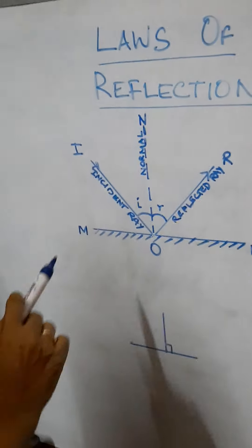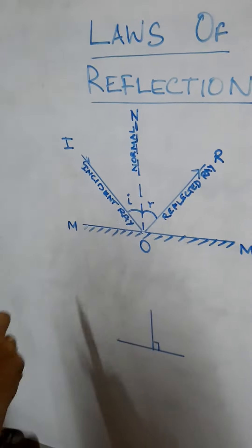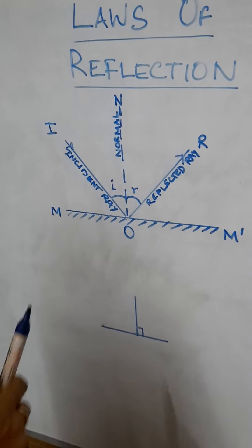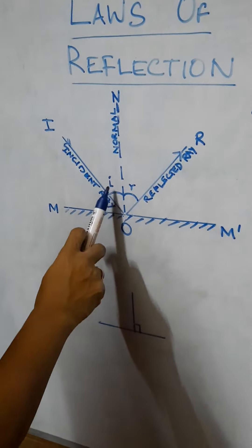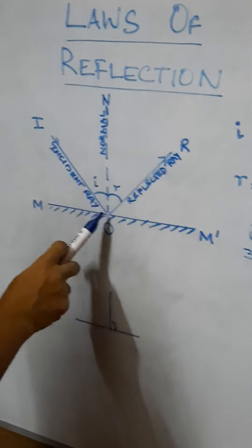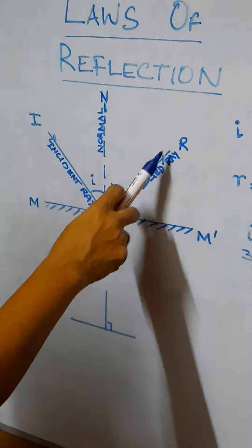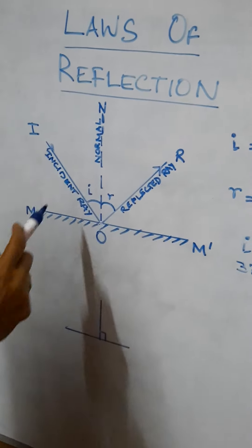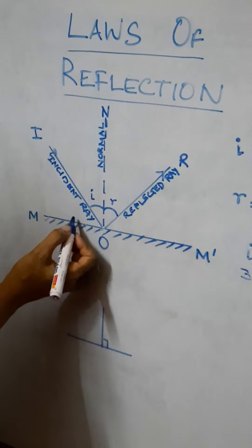Always remember angle of incidence - where you will make a mistake. Angle of incidence is the angle between the incident ray and the normal. And angle of reflection is the angle between the reflected ray and the normal. Generally what mistake do you make?